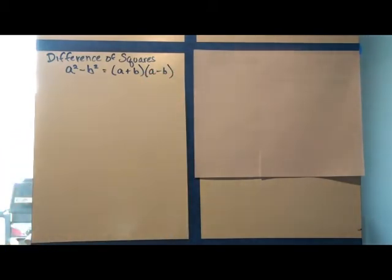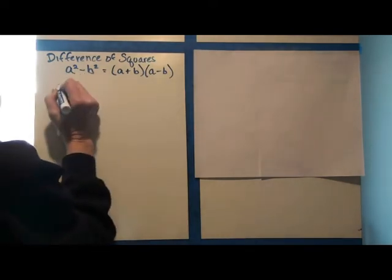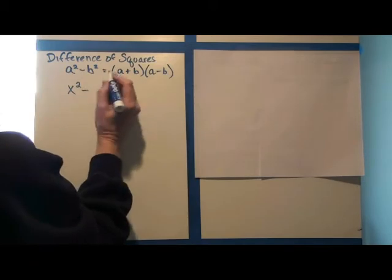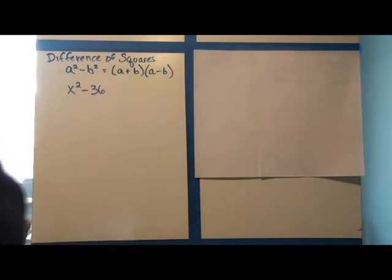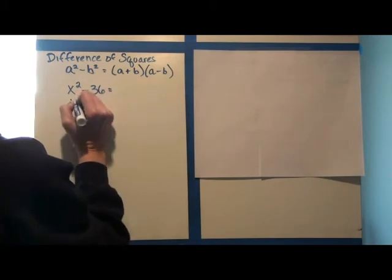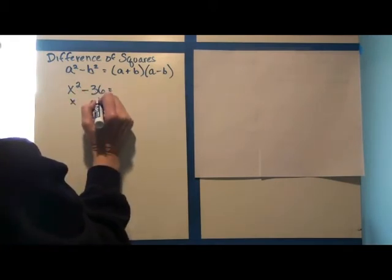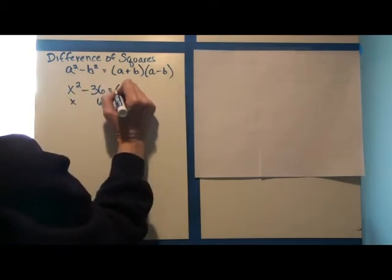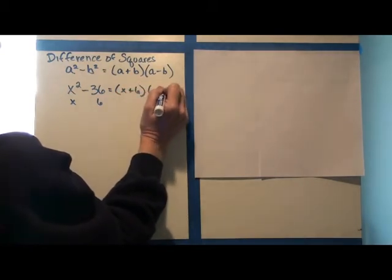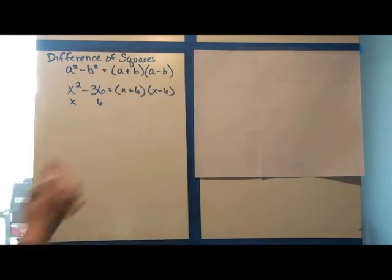So for example, using that formula, if we had x squared minus 36, we can take the square root of the x, which is x, and the square root of 36, which is 6, and put it into our formula x plus 6, x minus 6. And of course those can be reversed. You could do x minus 6, x plus 6. That's the difference of squares.